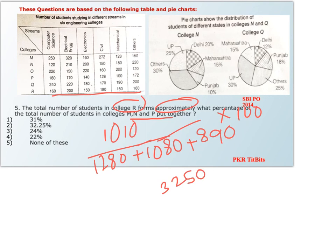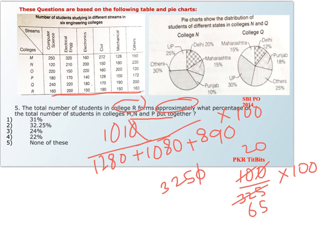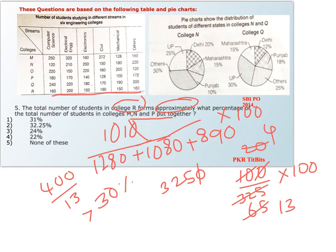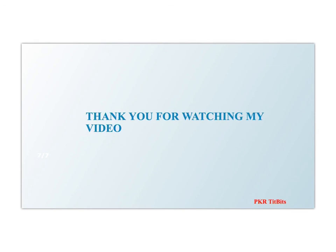We need an approximate value: 1010 divided by 3250 into 100. Simplifying by removing a zero gives 101 divided by 325 into 100, which is approximately 400 divided by 13. Since 13 times 30 is 390, this is just above 30%, approximately 31%, which is option 1. That's it, thank you for watching. Do subscribe to my channel PKR Tidbits and follow me on Facebook at facebook.com/PKRTidbits.